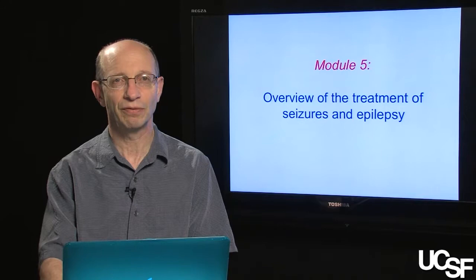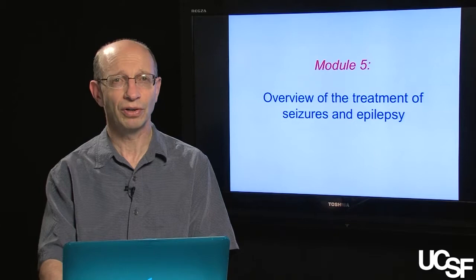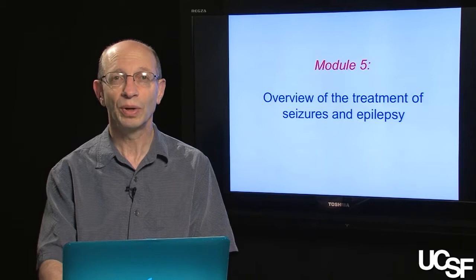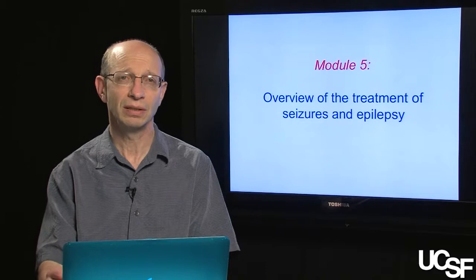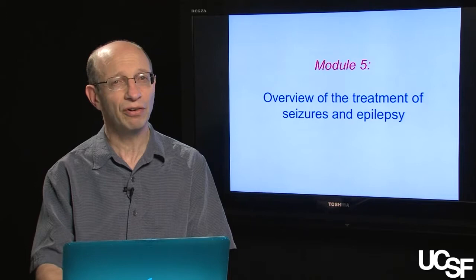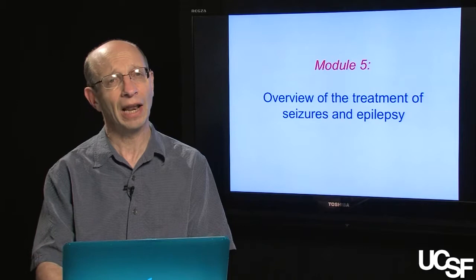Welcome back. This is module five of our series on seizures and epilepsy for brain, mind, and behavior. As you'll recall from the prior module, we covered first aid for a patient who's having a seizure, the differential diagnosis, causes depending on age of the patient, and the evaluation of a patient with a first time seizure — laboratory tests, blood studies, imaging studies, and EEG. In this module, I'd like to provide a general overview of the treatment of patients who present with seizures and epilepsy.